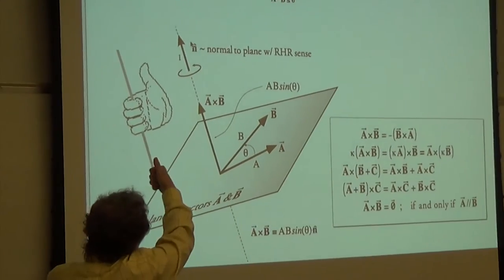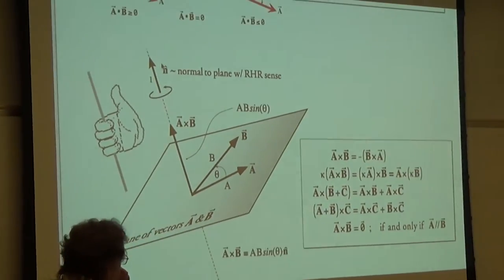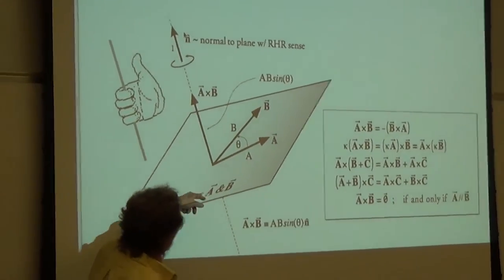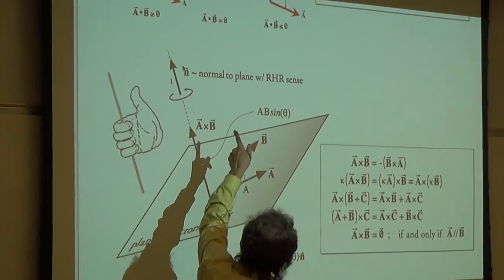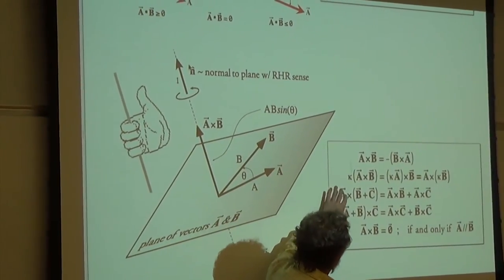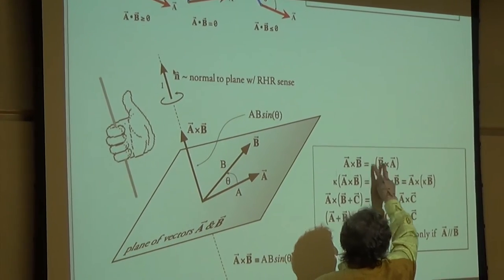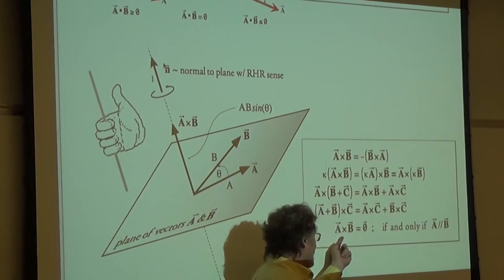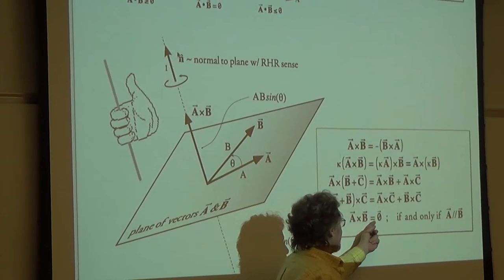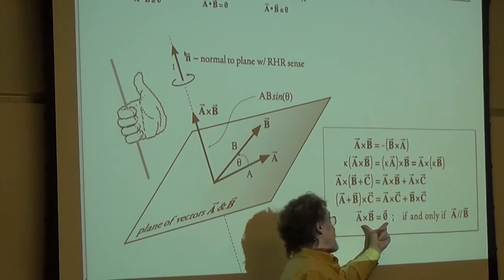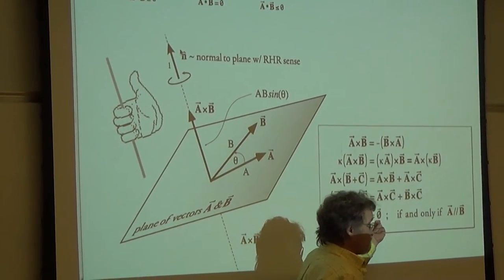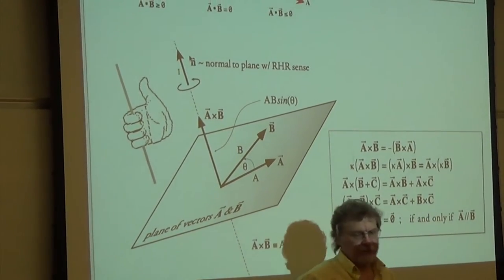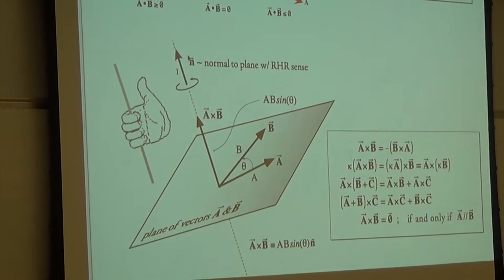Here's your cross product. Right-hand rule: magnitude times magnitude times sine is the magnitude. Right-hand rotation gives a normal to the plane. Cross product is anti-commutative. If two vectors have a zero-value cross product, what does that tell you about those two vectors? They have to be parallel to one another.